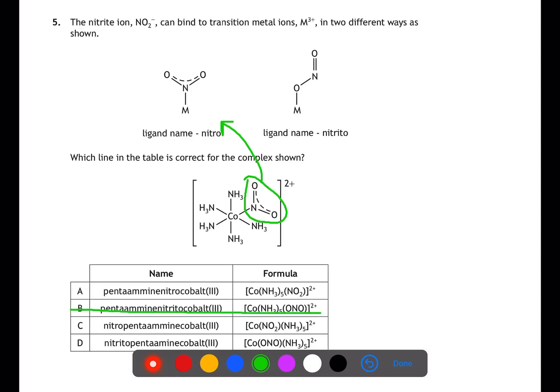We can see from the diagram that the ligand is bonded through the nitrogen atom, meaning we can ignore B and D. We then need to look at the two options available in A and C. For the naming, ligands are always named alphabetically. Therefore, pentaamine nitro cobalt will be the name and A will be the answer.